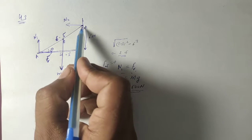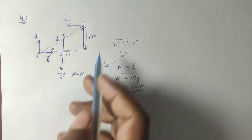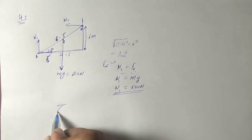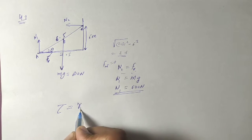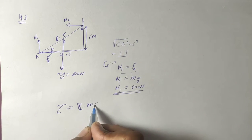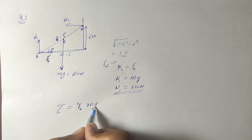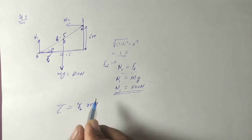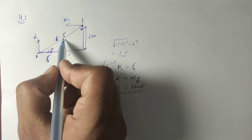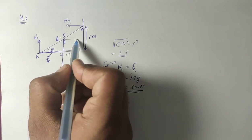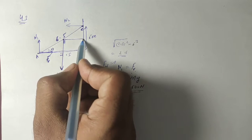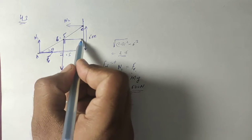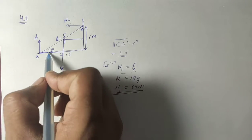We know that torque about C due to mg equals r-perpendicular into the perpendicular force mg. The perpendicular distance here is this distance, and this distance corresponds to the perpendicular distance related to angle theta.